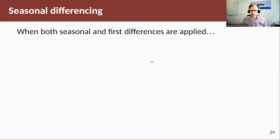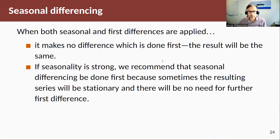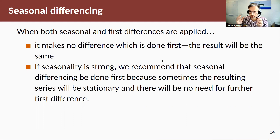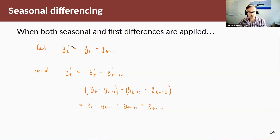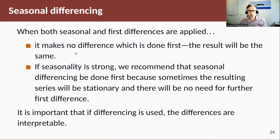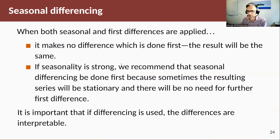When we have seasonality, taking a seasonal difference may also deal with the mean — as seen in the first example. Our recommendation is to always take the seasonal difference first, then take a first-order difference if needed. It does not matter which order you apply them — taking first-order difference first then seasonal difference gives the same result — but taking the seasonal difference first may make the first-order difference unnecessary.